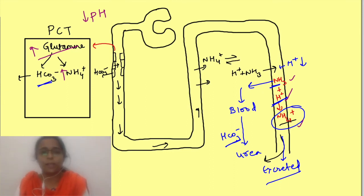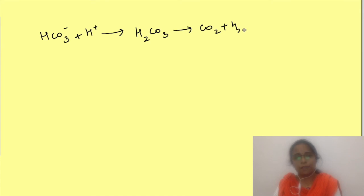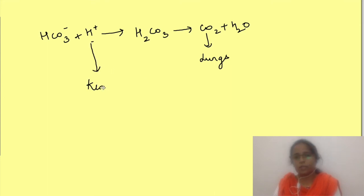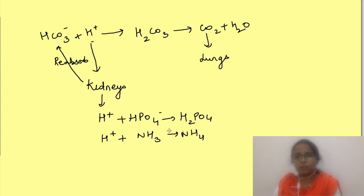To summarize: bicarbonate ion is the most important buffer in extracellular fluids and is used up with acid production, forming H2CO3 and finally CO2 and water. Carbon dioxide is excreted by the lungs. Kidneys excrete hydrogen ions and reabsorb filtered bicarbonate. Hydrogen ions in the tubular fluid are buffered by phosphate and ammonia, and by virtue of this there is regeneration of new bicarbonate ions.